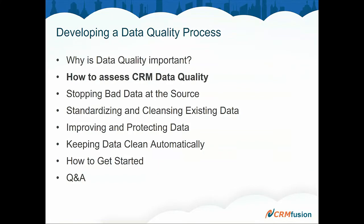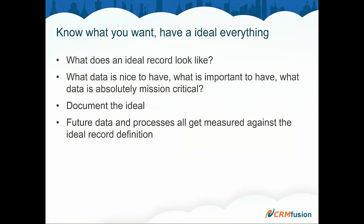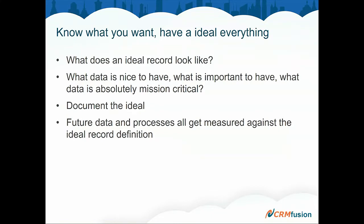Let's talk about how to assess CRM data quality. When you first get into a database, maybe you join a new company and look at the data — how do you really assess how good this data is? The first thing we have to start with is defining an ideal. You can't get to somewhere if you don't know where it is. The process of identifying what ideal data looks like is key to this entire process. What data on what records is important, nice to have, kind of important, or absolutely mission critical? We have to document this. If the users aren't told what's important, how can we expect them to focus their efforts to try to meet this undocumented ideal?